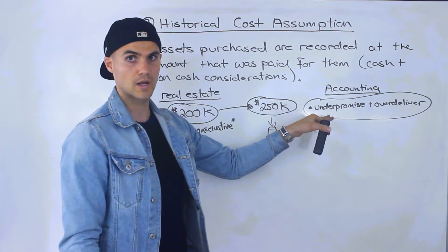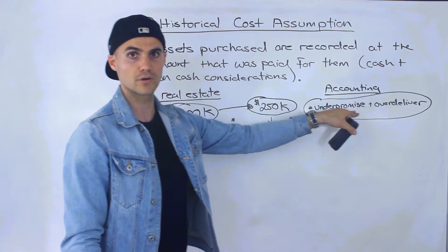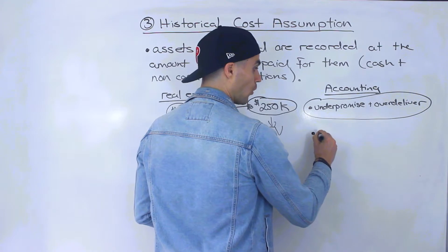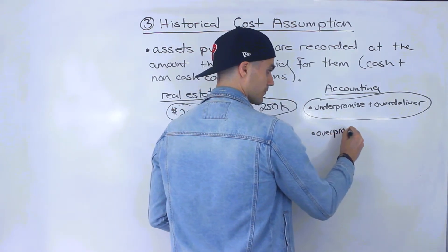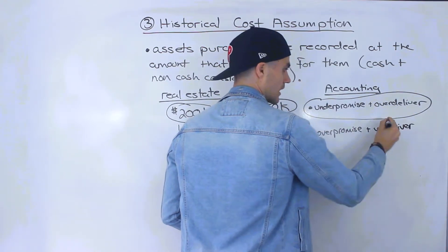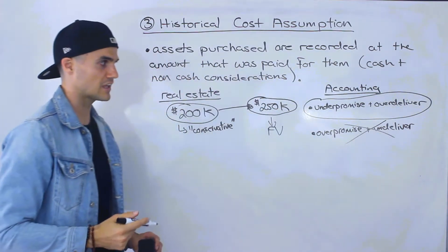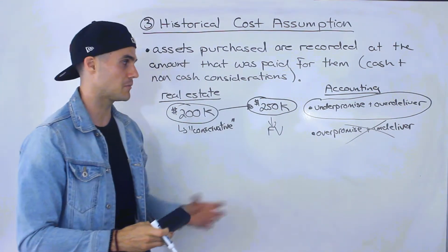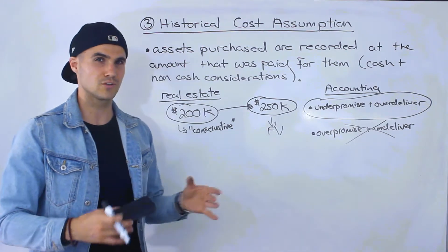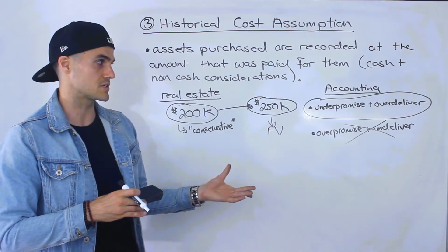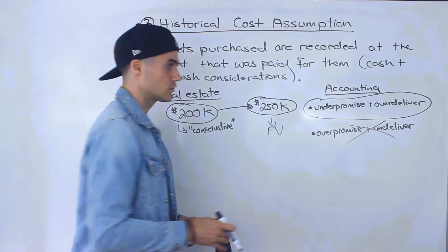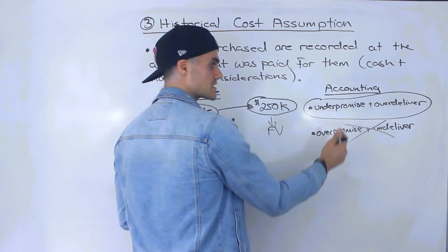External users — investors, creditors — are okay with being under-promised and then over-delivered on the financial statements. Problems arise when companies start over-promising and then under-delivering. Even in your personal life, you may have run into someone who promised something and then under-delivered or didn't deliver at all. We kind of lose trust in that person. So it's always better to under-promise and over-deliver.